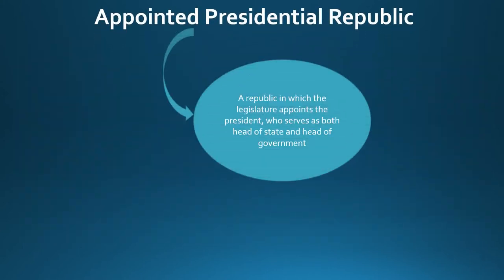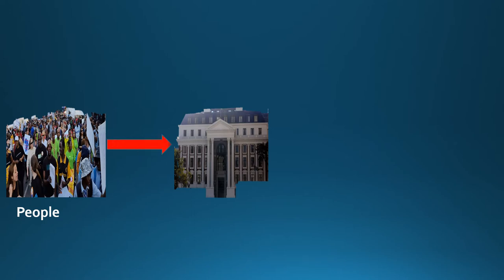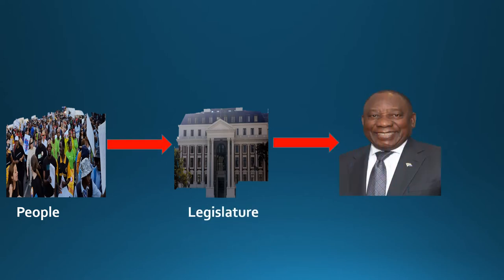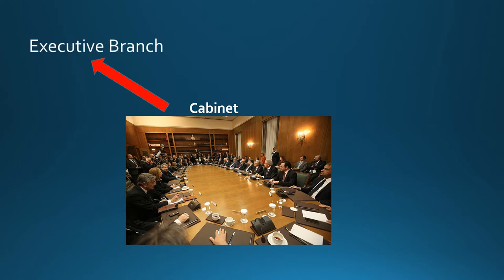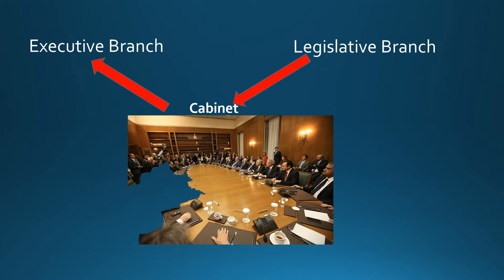An appointed presidential republic — a term coined for this video — is a republic in which the legislature appoints the president, who serves as both head of state and head of government. The legislature, whose members are directly elected by the people, elects or appoints the president, meaning the president is not directly elected by the people. The cabinet is part of the executive branch and is appointed by the president, and the legislature may or may not have authority to remove cabinet members by a simple vote. Examples are South Africa, Botswana, Guyana, and Suriname.